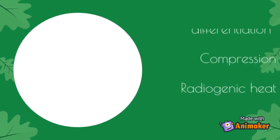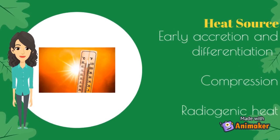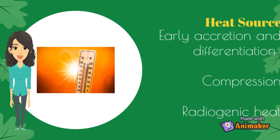There are three heat sources in the Earth. The first is the early creation and differentiation of the Earth, where heat is slowly creeping up to the surface from the core. The second is compression — the Earth is constantly growing its weight. The final one is the disintegration of radioactive elements, which contributes the most heat, roughly 70% of the total heat released from the Earth.